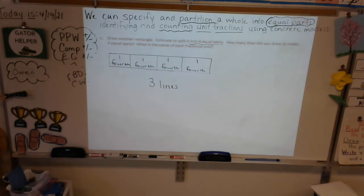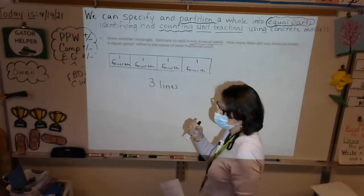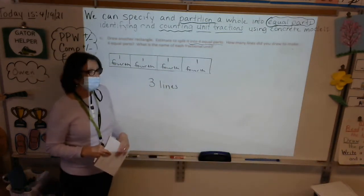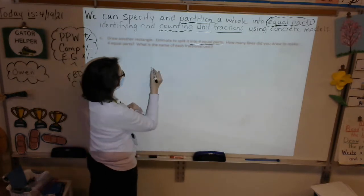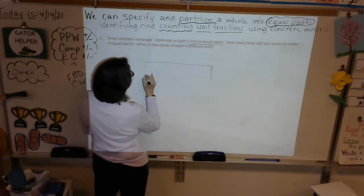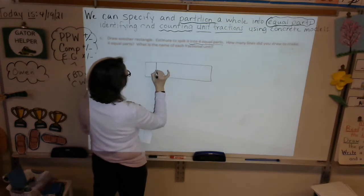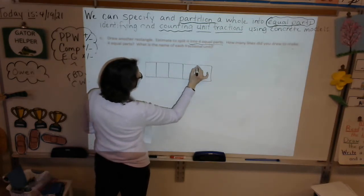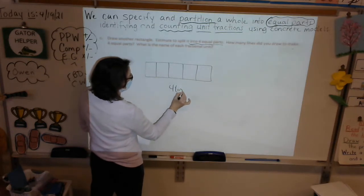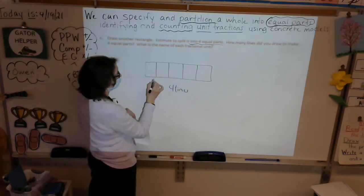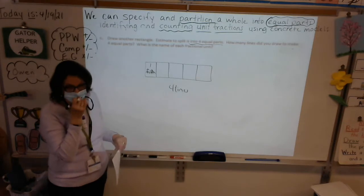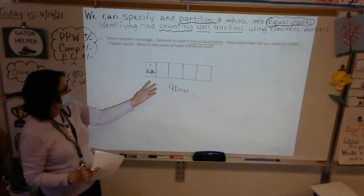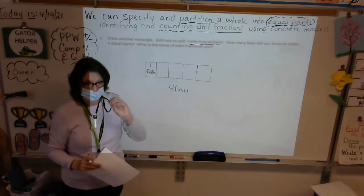Let's come back together so our friends at home can hear. If we need five equal parts, we will draw four lines. I'll prove it: I need five equal parts, so I draw four lines — one, two, three, four. How many parts do we have? One, two, three, four, five. Each one will be called one fifth. We'll eventually learn all the units, but if you have five equal parts they're called one fifth, and you draw four lines.